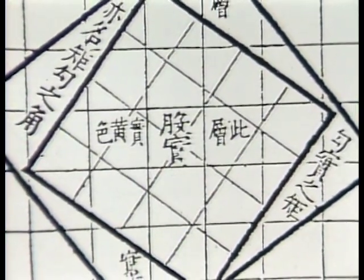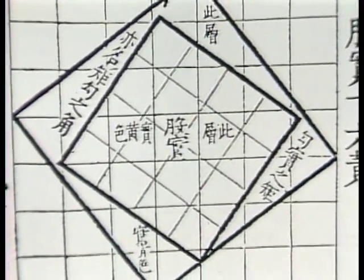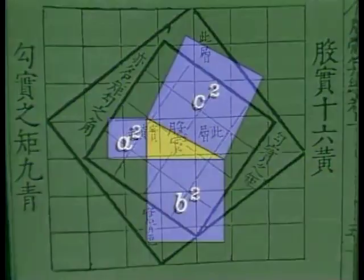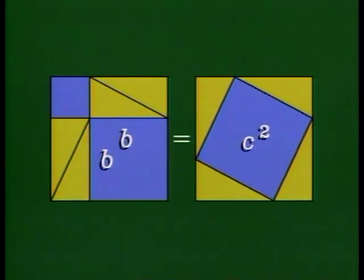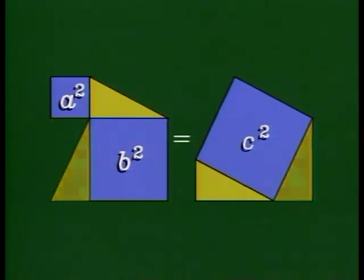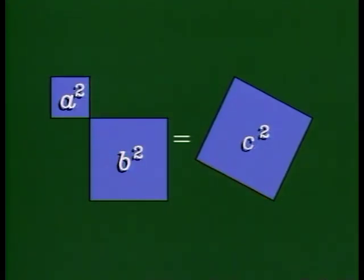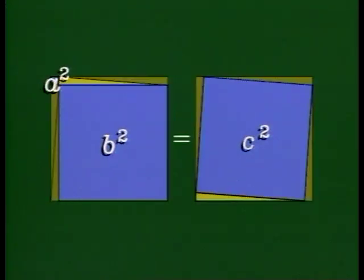We don't know for sure how Pythagoras proved this theorem, but he might have done it like the Chinese did. Make four copies of the original triangle, put one side as a reference, and slide the triangles around. We see that the area B squared plus A squared does indeed equal C squared. You can also see that this works for any right triangle.